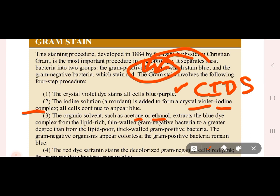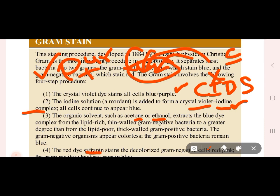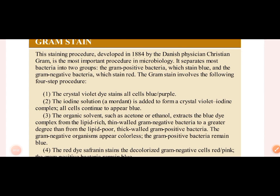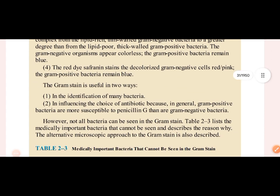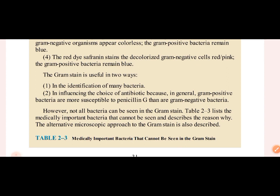Then the decolorizing agent — acetone or alcohol — is added. Gram negative bacteria lose the crystal violet-iodine complex and become colorless, while gram positive bacteria remain purple. After decolorizing, safranin counter-stain is added. Gram positive bacteria retain purple color, while gram negative bacteria pick up the safranin and appear pink or red. This gram staining helps us identify bacteria and determine susceptibility.